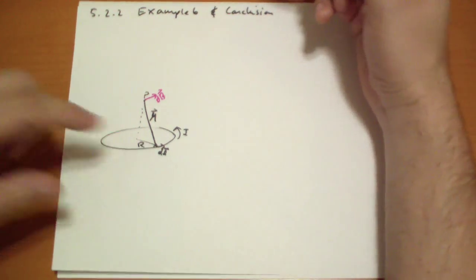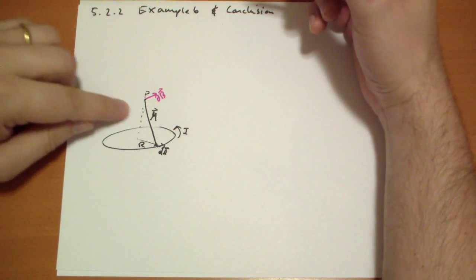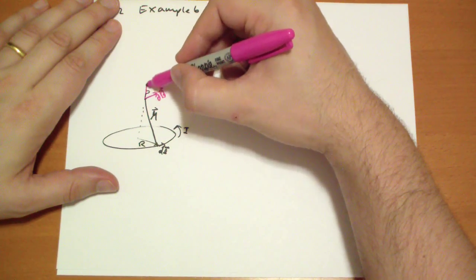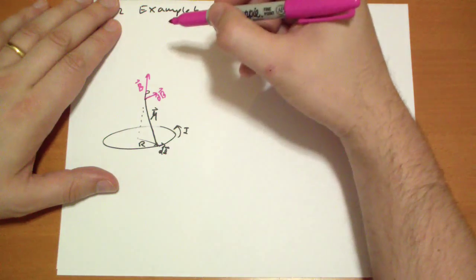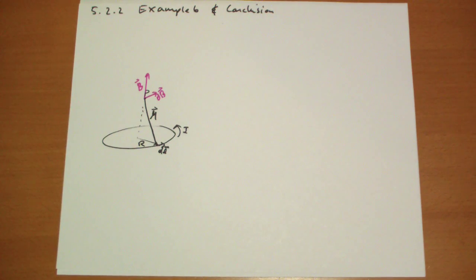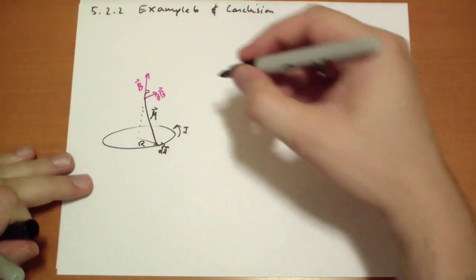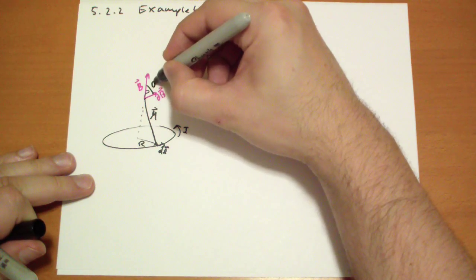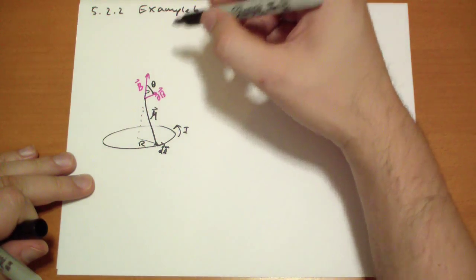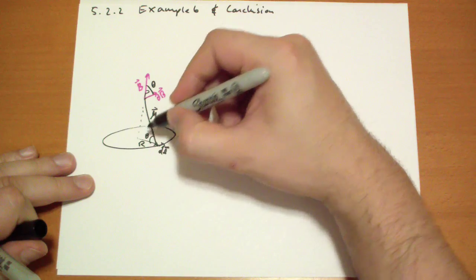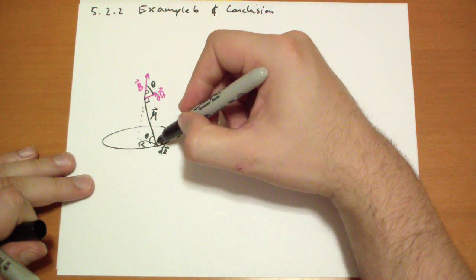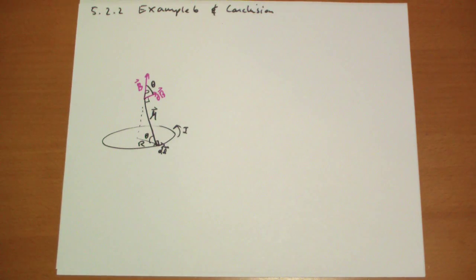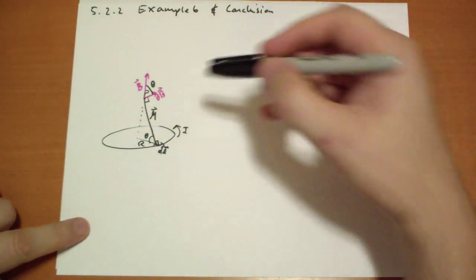This is the infinitesimal DB vector, and this is going to trace out a cone where the horizontal components are going to cancel and you're going to get the sum of the B vector. With this angle, and this angle is theta, which means that this angle is theta. The reason why is this is perpendicular, this is perpendicular.